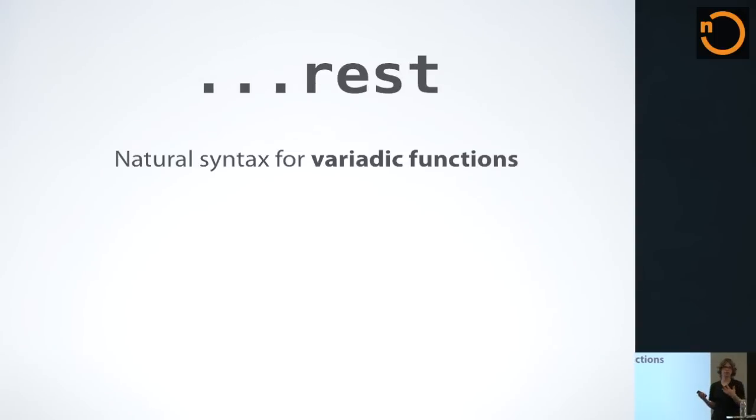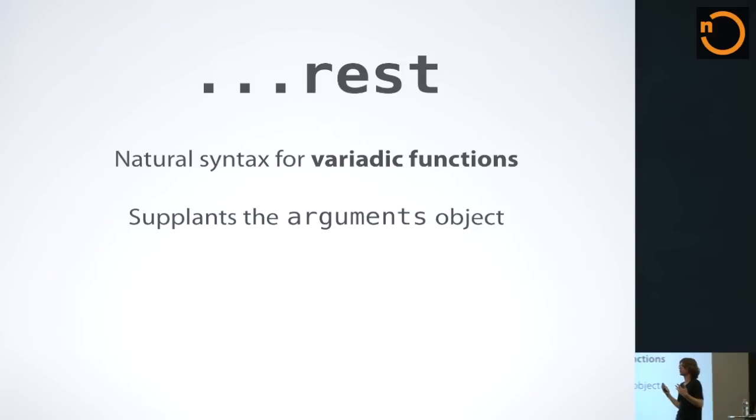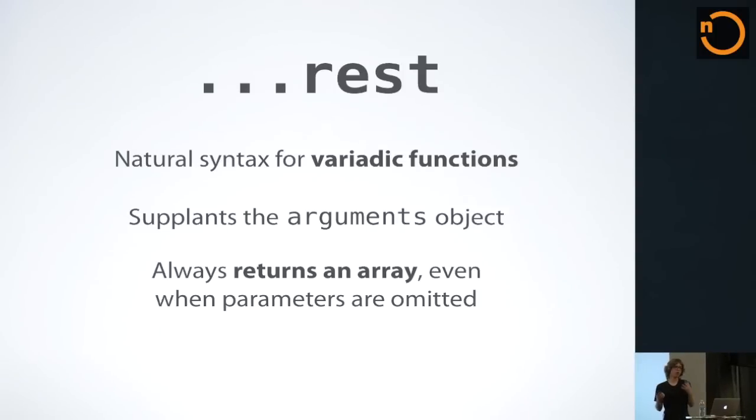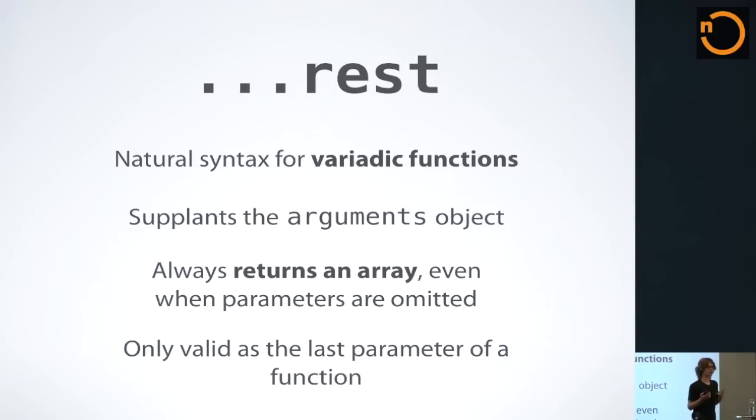Rest is spread's counterpart. It provides this natural syntax for variadic functions, and it's a nice replacement for the arguments object. Currently, the JavaScript arguments object is array-like in that it has a length property and numeric indices, but it's not an array. You can't call array methods on it. And arguments can be quite magical. Because arguments is local to a particular function, you can't reference a parent function's arguments variable. So rest allows you to work around that. It also always returns an array, even when parameters are omitted. Rest is also only valid as the last parameter of a function.